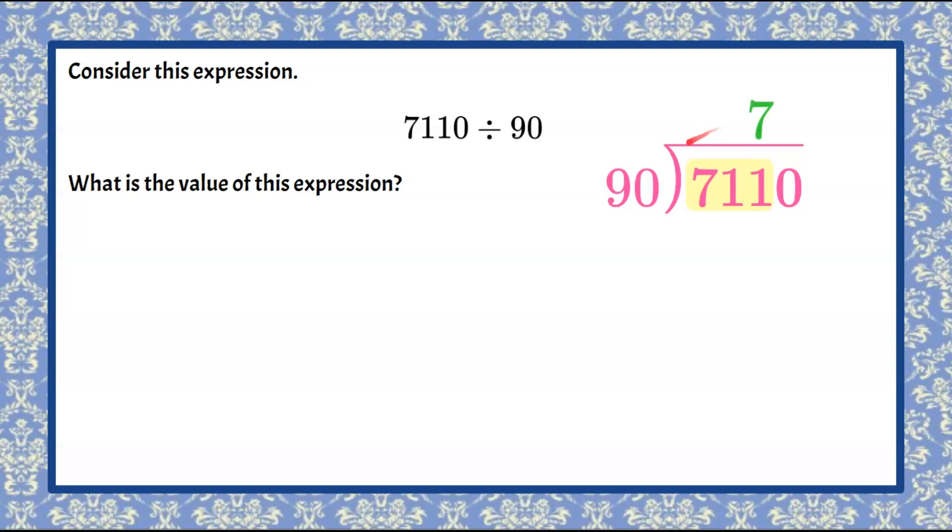So seven times nine is 63. Add the zero, we get 630. Now we're going to subtract 630 from 711. One subtract zero is one. 71 subtract 63 is eight.